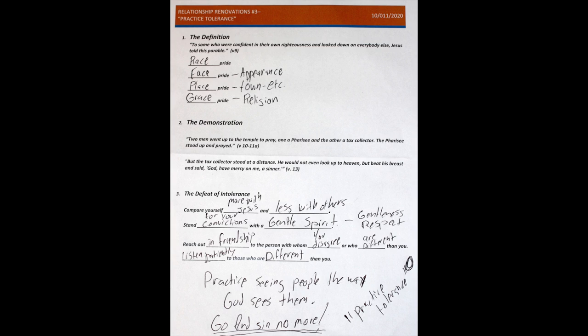First of all, the definition. We have race pride - in other words, white, black, red, and yellow. There's face pride, which is appearance. Place pride, for example, people who are like 'I came from there' or 'I live there' or 'I work there.' And then grace pride, like 'I'm a part of this religion.' So there's different kinds of pride.